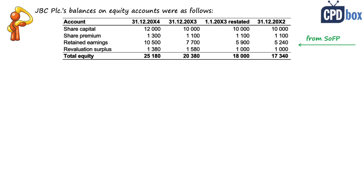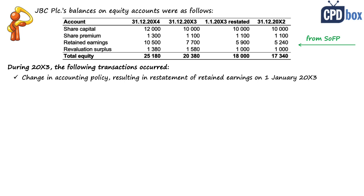The following transactions occurred, and in real life it is you who should investigate what moved and how. The most common ones include: a change in accounting policy resulting in restatement of retained earnings on 1 January 20x3 by 660 currency units upwards. We don't need to know which policy changed — we just need to know the effect on equity in order to report it correctly.